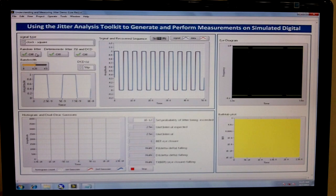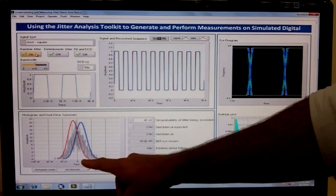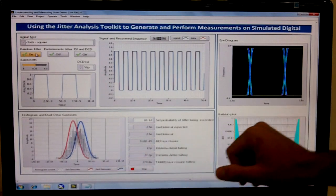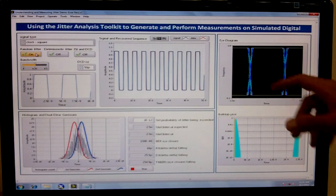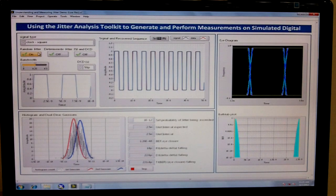And so using the toolkit, we're going to introduce random jitter, which you can see is now represented down here in this histogram as well as a widening of the transition area in the eye diagram, and then certainly reflected in the bathtub plot down below.